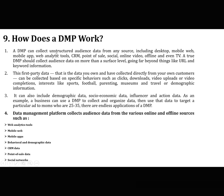How does a DMP work? A DMP can collect unstructured audience data from any source including desktop, mobile web, mobile app, web analytics tools, CRM, point of sale, social, online video, offline, and even TV. A true DMP should collect audience data beyond surface level, going far beyond URL and keyword information. First-party data — data you own and have collected directly from your customers — can be collected based on specific behaviors such as clicks, downloads, or video completions; interests like sports or travel; or demographic and socioeconomic information. For example, a business can use a DMP to collect and organize data, then use that data to target a particular ad to a specific audience.